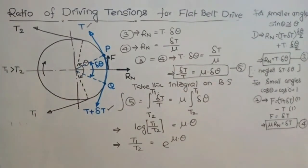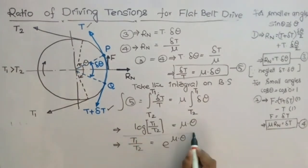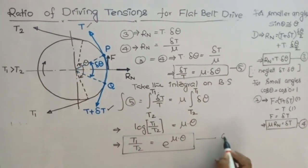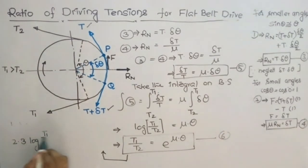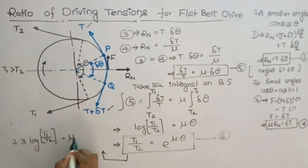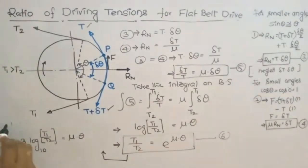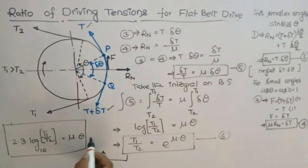From this, you can rewrite the equation as T1 by T2 equals e to the power mu into theta. This is equation number 6. This equation can also be written in another form as: 2.3 log(T1 by T2) equals mu into theta, where here the log is base 10. This is equation number 7.